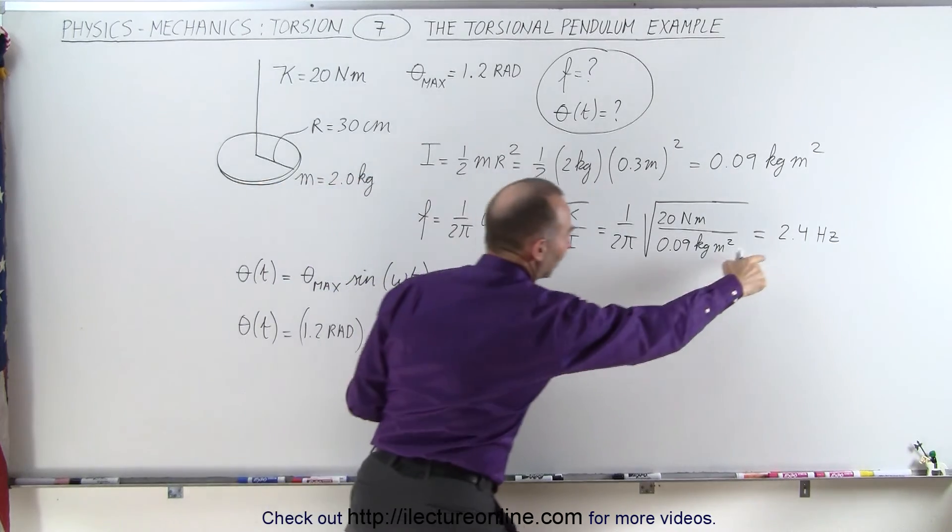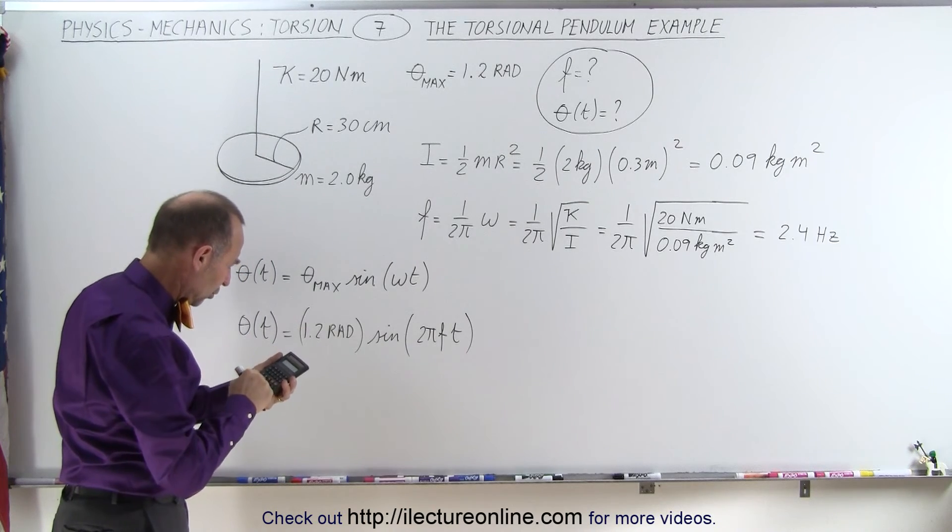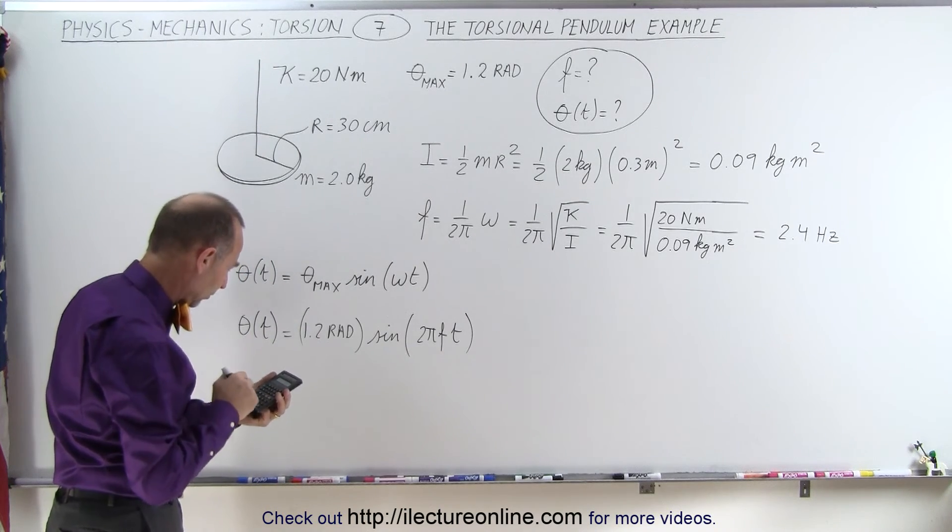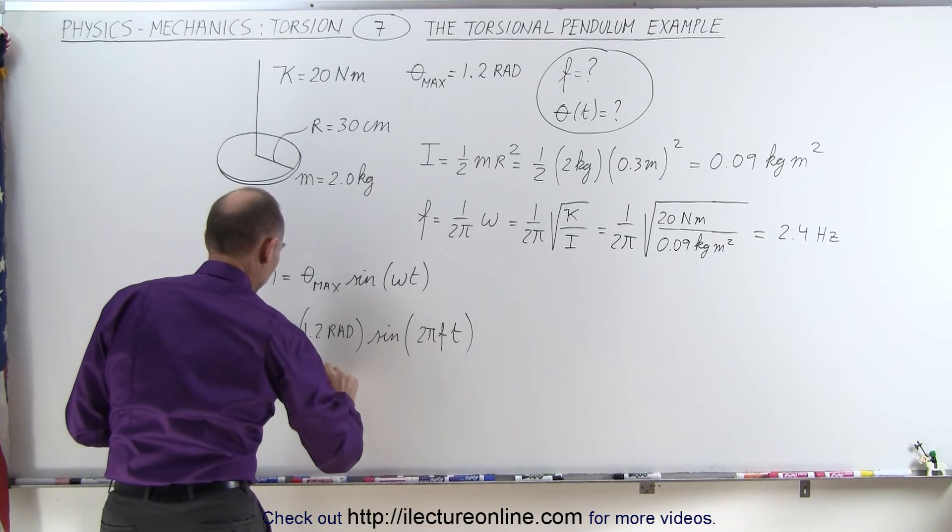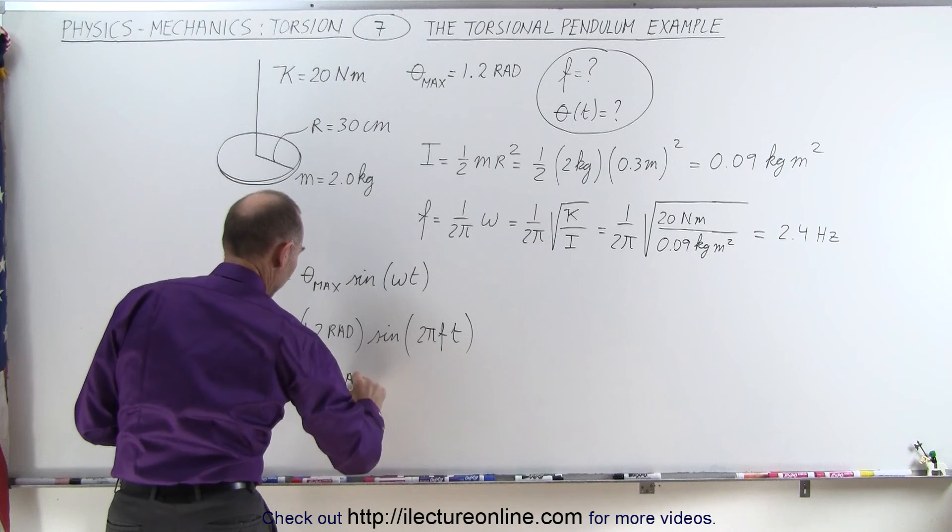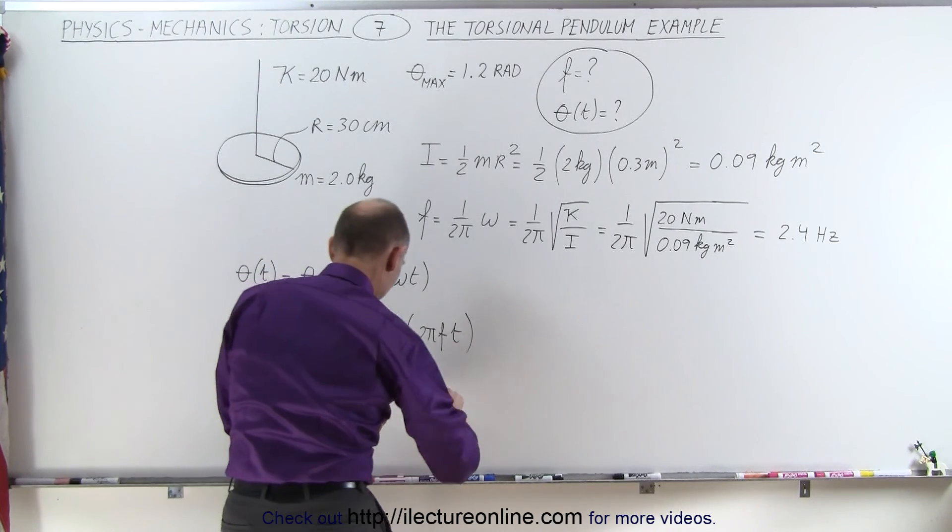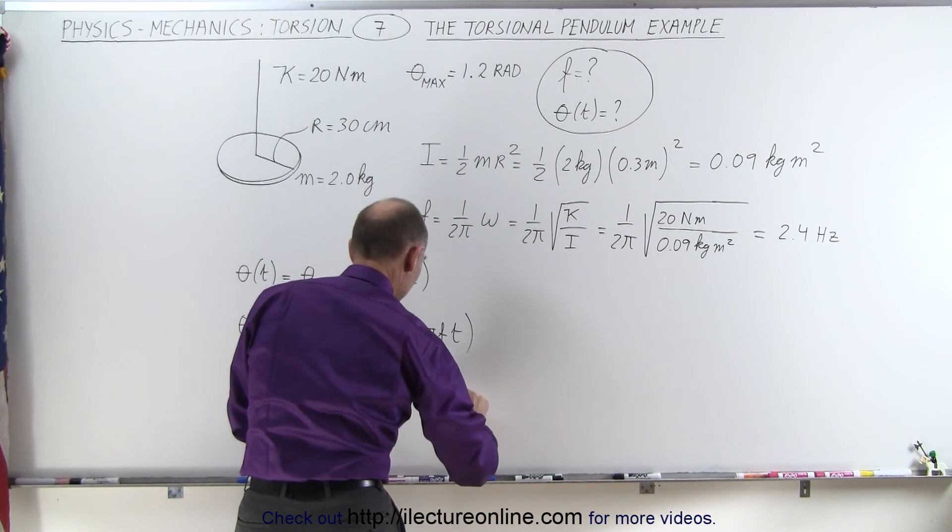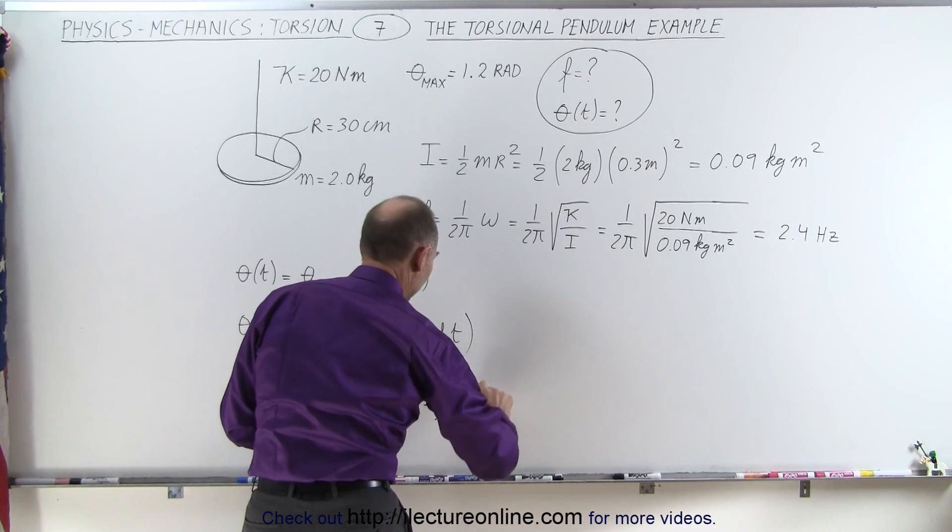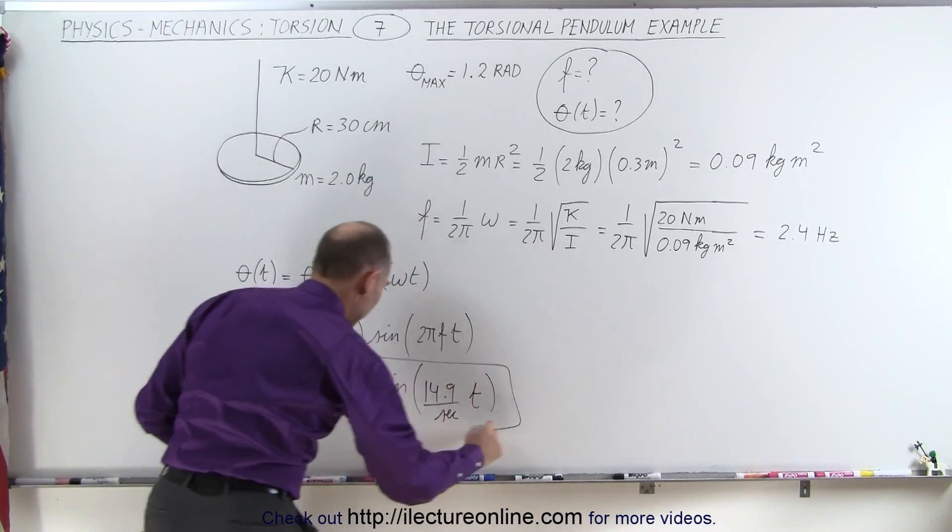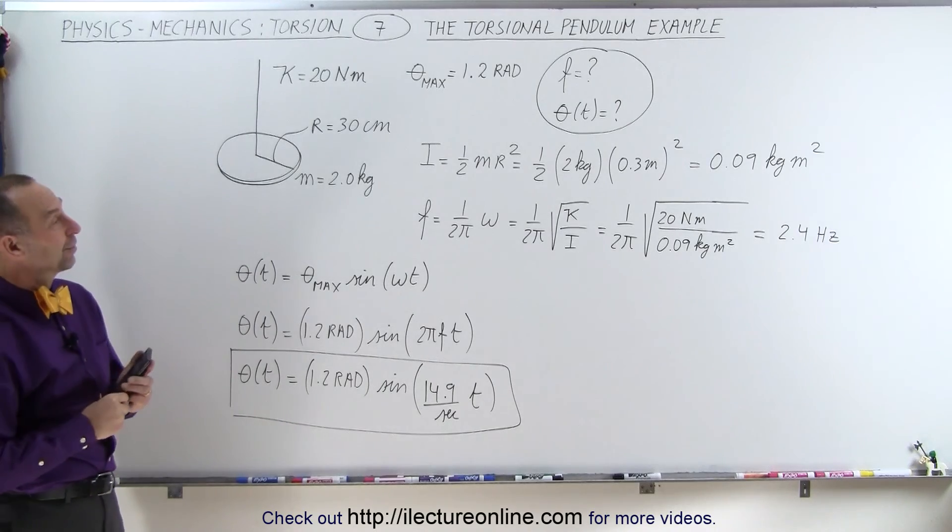Since we've already found what f equals, we multiply that times 2π, and we get θ as a function of time equals 1.2 radians times the sine of 14.9 per second times t. That would be the equation describing that motion. And that's how it's done.